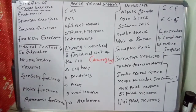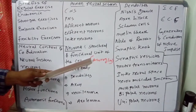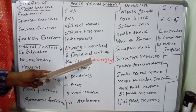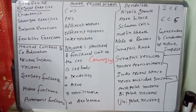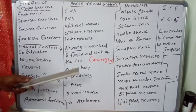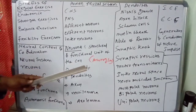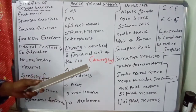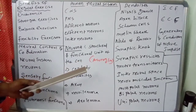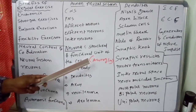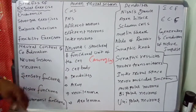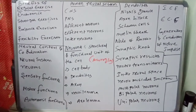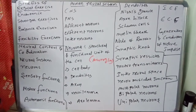Neuroglia performs several functions such as providing nourishment to surrounding neurons, memory processing, repairing injured tissues, and regeneration. These are all very important functions. Neurons are the structural and functional unit of the nervous system.